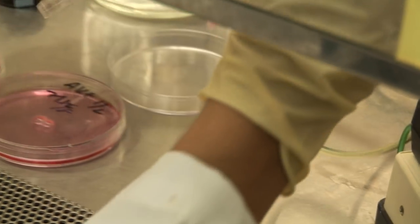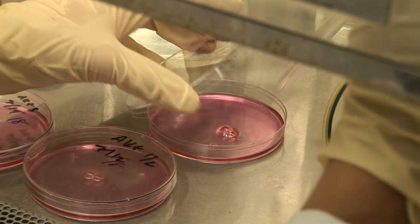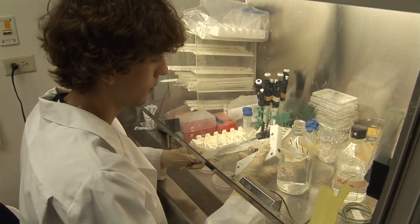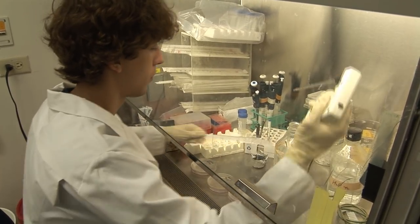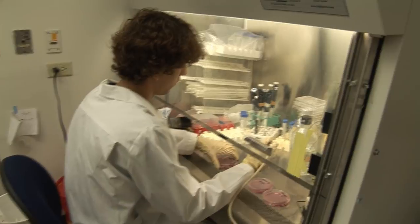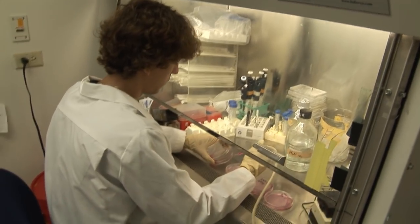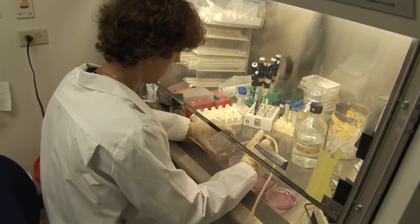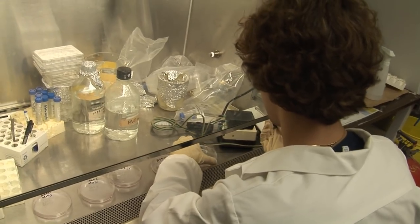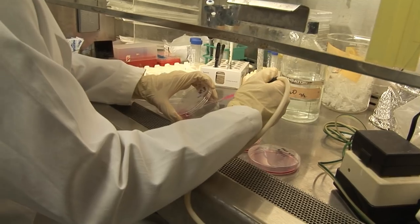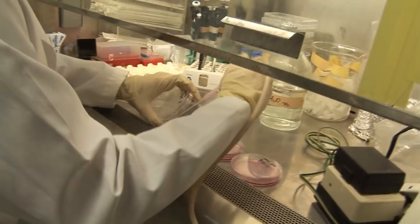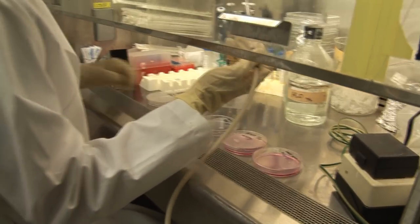Before we can engineer the tissue, we have to culture the cells and make sure we have a lot of cells. Usually, to make a tissue, it takes a pretty substantial amount of cells. We'll vacuum out the current media, we'll wash it with a PBS, vacuum out the PBS, and then we'll replace it with new, fresh media, which contains all the healthy nutrients to help the cells continue to grow and cells to multiply and split.